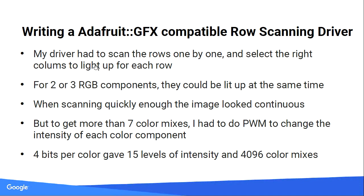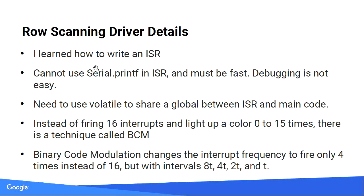I was able to do four bits per color. I found a method called Binary Code Modulation where instead of flipping 16 times for 16 intensities, you have one interrupt that's 4T, then 2T, then 1T. So you can have four interrupts instead of 16 and still get 16 levels of intensity. I was able to get more time to run my code as opposed to spending it in interrupts.